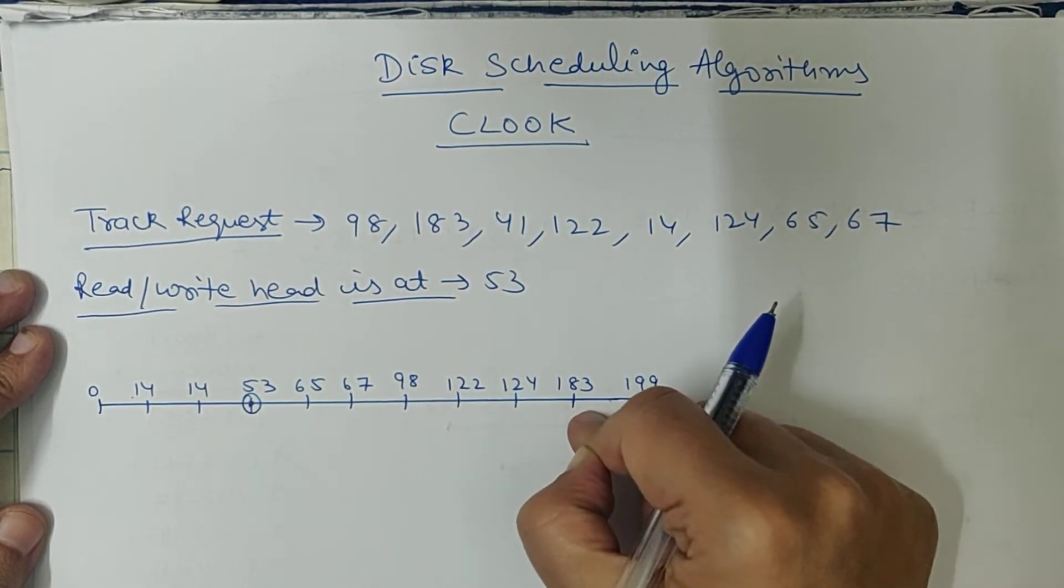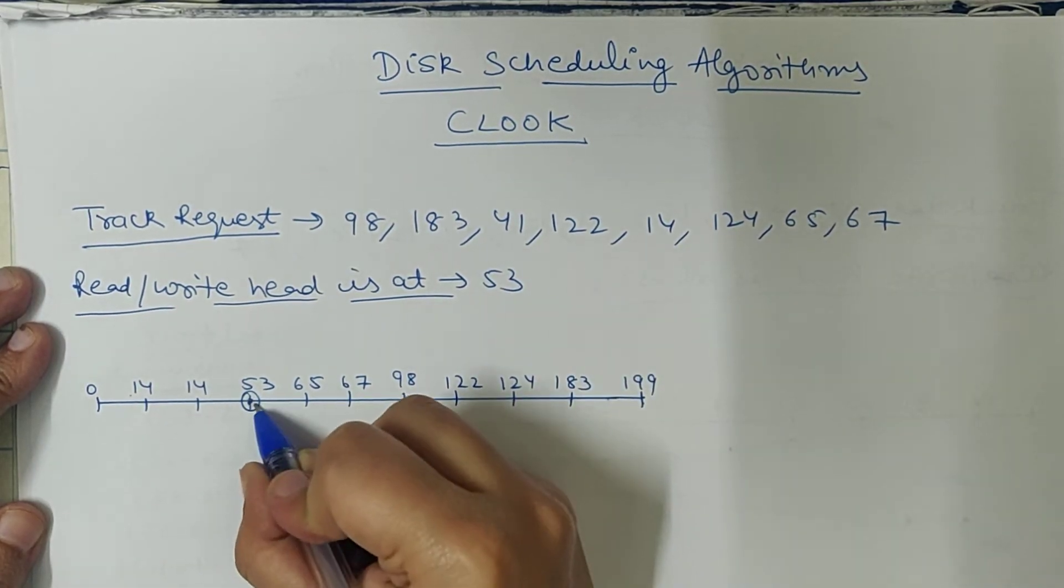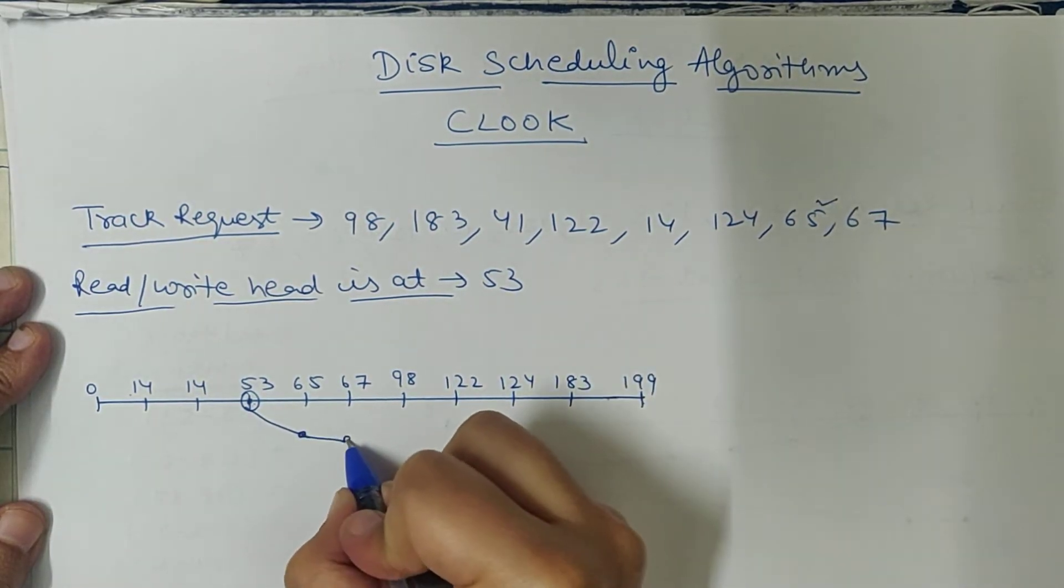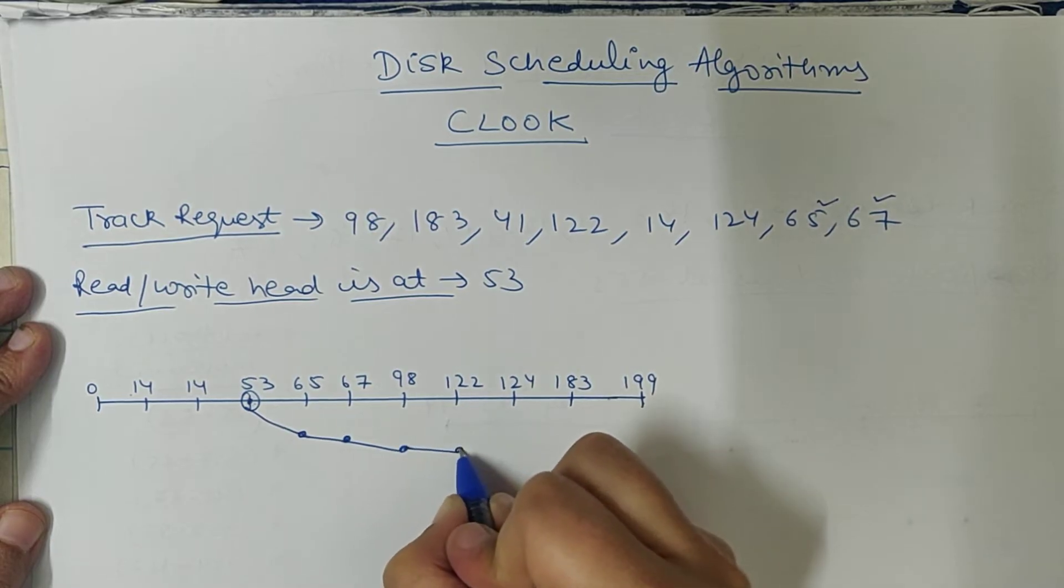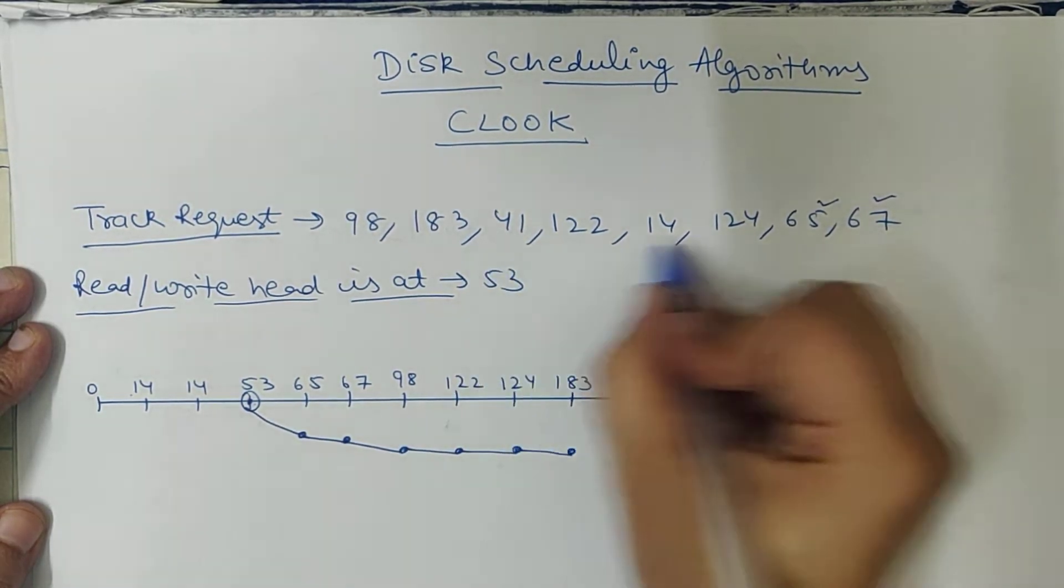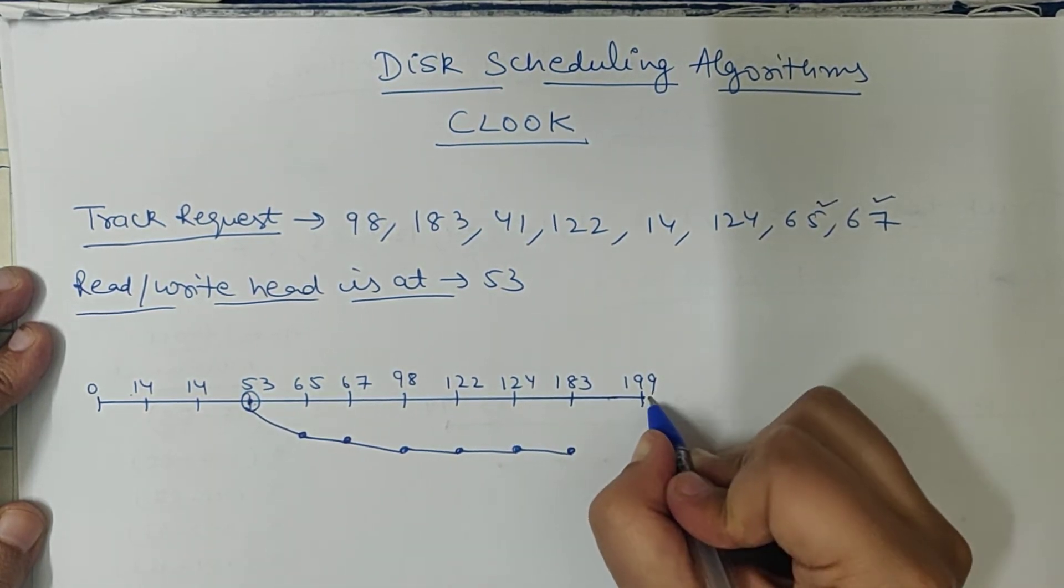Okay, so let's start. 53, next request in forward direction is 65, after that next forward direction request is 67, then 98, then 122, then 124, then 183. That's it. After 183 there is no request in this direction, so we won't go further. In CSCAN we used to go to 199.